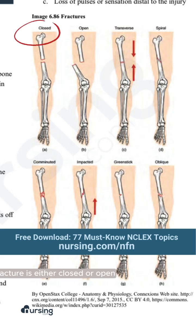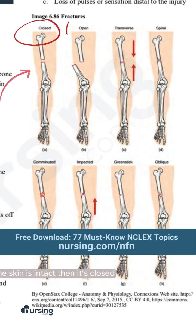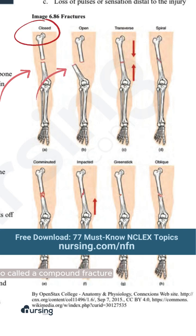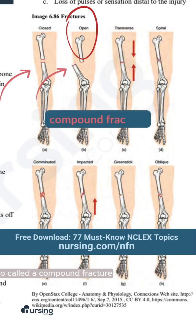A fracture is either closed or open. If the skin is intact, then it's closed. If it pierces the skin, it's open, also called a compound fracture.